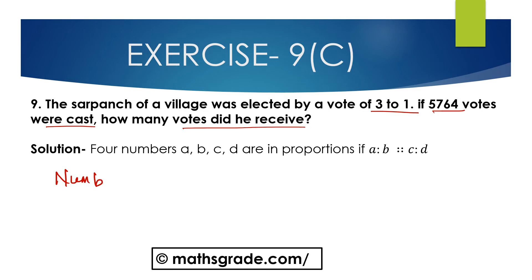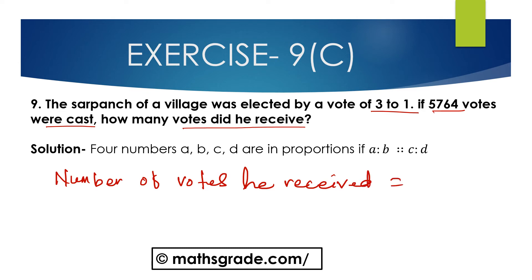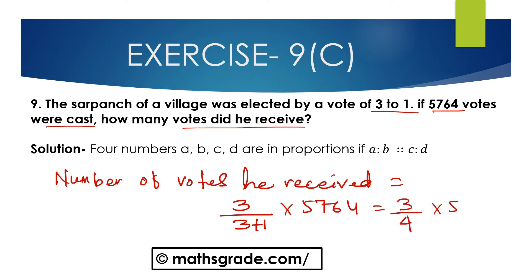So the number of votes received will be 3 divided by the total, which is 3 plus 1, multiplied by 5764. That is 3 divided by 4, multiplied by 5764.